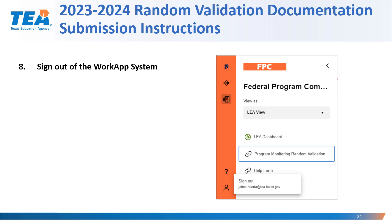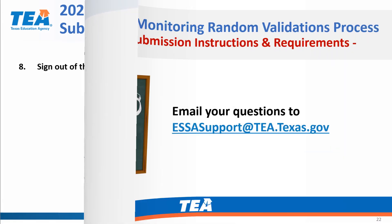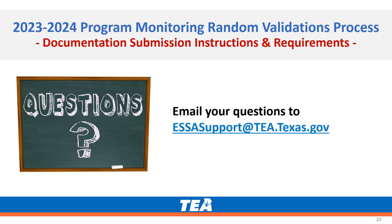Now that you've attached your document and entered all the information in the details form data tab, you are now ready to sign out of the WorkApp system. To sign out, locate the icon with the person, click on sign out, and you'll be able to sign out of the system successfully. This concludes the Documentation Submission Instructions and Requirements Training portion of the Program Monitoring Random Validations process. If you have any additional questions, please email your questions to SSSupport@TEA.Texas.gov. Thank you.